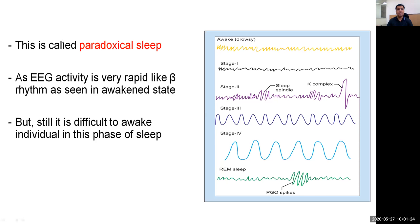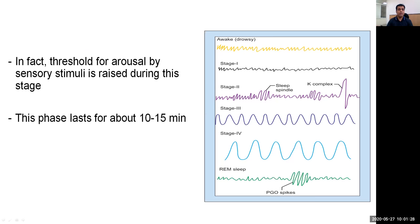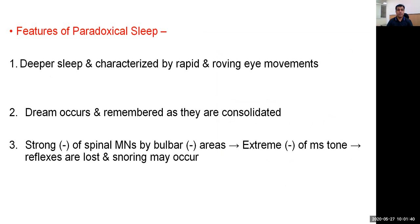Hence the term paradoxical sleep has been given. The ratio for arousal by sensory stimuli is raised during this stage. This phase lasts for about 10 minutes. It is a deeper sleep compared to NREM sleep and is characterized by rapid and roving eye movements, hence the name REM sleep.